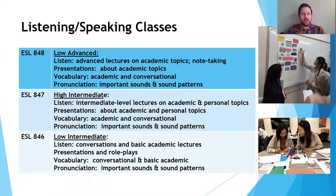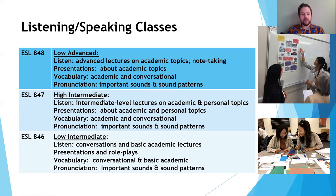For our listening and speaking classes, we only offer three levels: low intermediate, high intermediate, and low advanced. The low advanced class is also appropriate for high advanced students, so if you are a high advanced student you can also take ESL 848. Many of the skills are similar between each class, just at slightly different levels. In low intermediate, you will learn listening based on conversations and basic academic lectures, do some presentations and role plays, and learn both conversational and basic academic vocabulary. In ESL 847, you also learn academic and conversational vocabulary at a higher level, with intermediate level lectures on academic and personal topics.